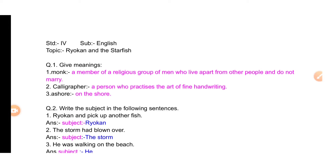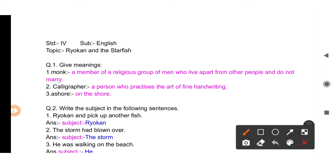Hello my dear students, this is Rupali teacher and you are watching my channel. Today we are going to see a lesson of English Balbhati textbook of standard four, and the name of the lesson is Ryokan and the Starfish. Ryokan is a Japanese name — your teacher might pronounce it differently, as Ryokan or Ryokan, whatever they feel comfortable with. I'm going to pronounce it as Ryokan. So let's start.